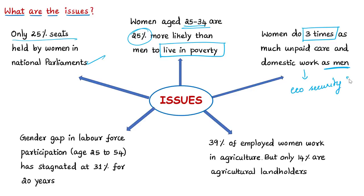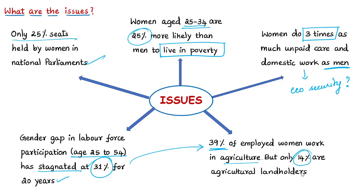The report also mentions that women on average do three times as much unpaid care and domestic work as men, posing long-term consequences for women's economic security. The gender gap in labor force participation among adults aged 25-54 has remained stagnant for the past 20 years at 31%. Almost 39% of employed women work in agriculture, forestry, and fisheries, yet women form just 14% of agricultural landholders.